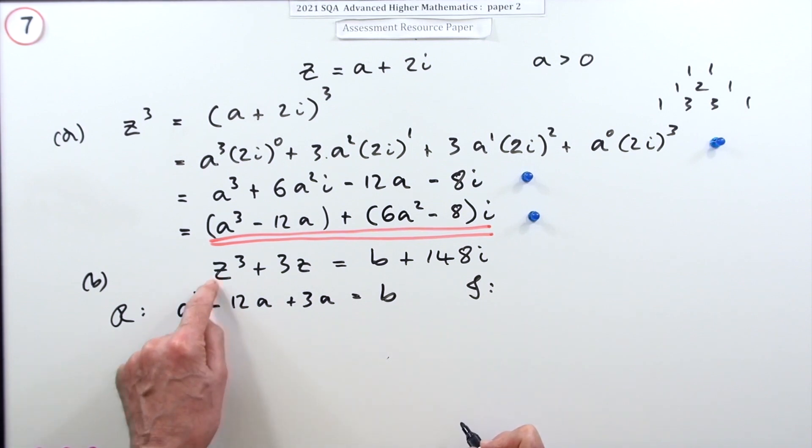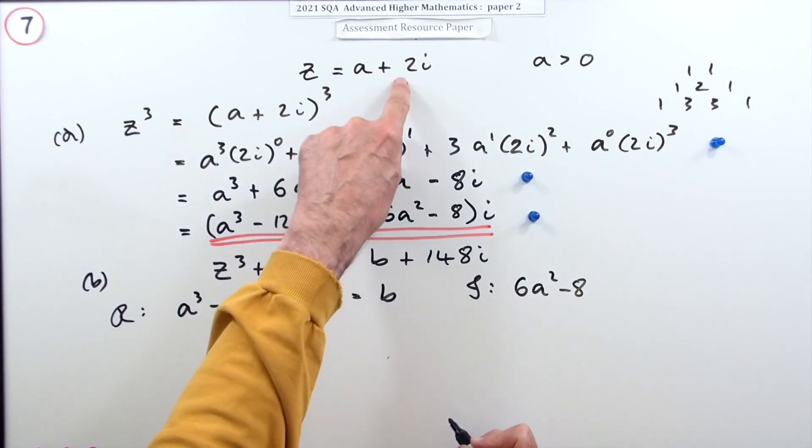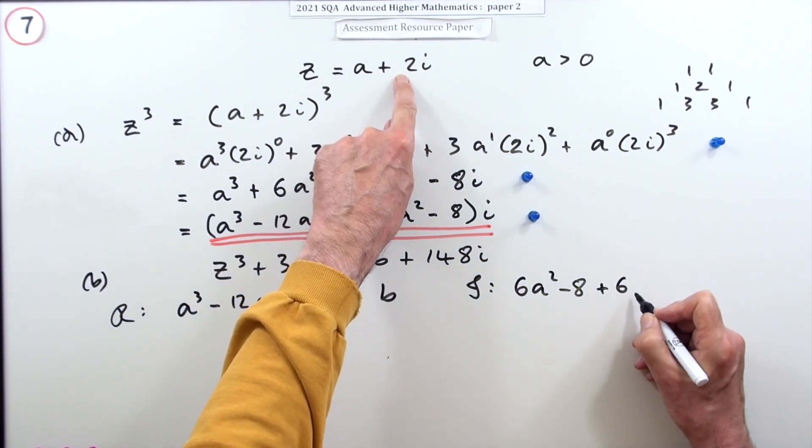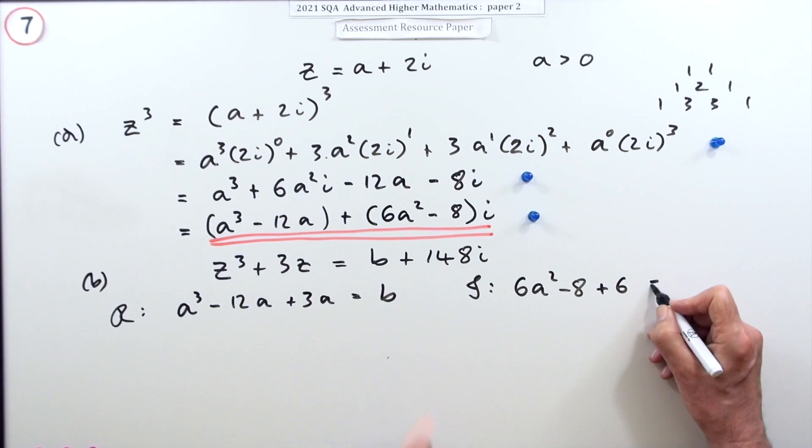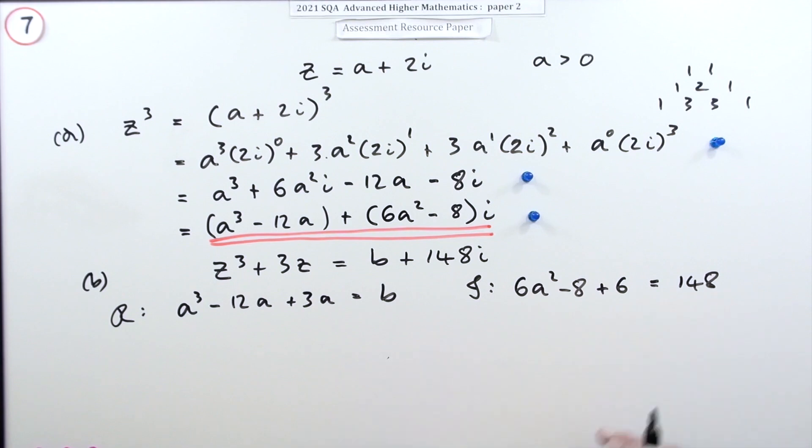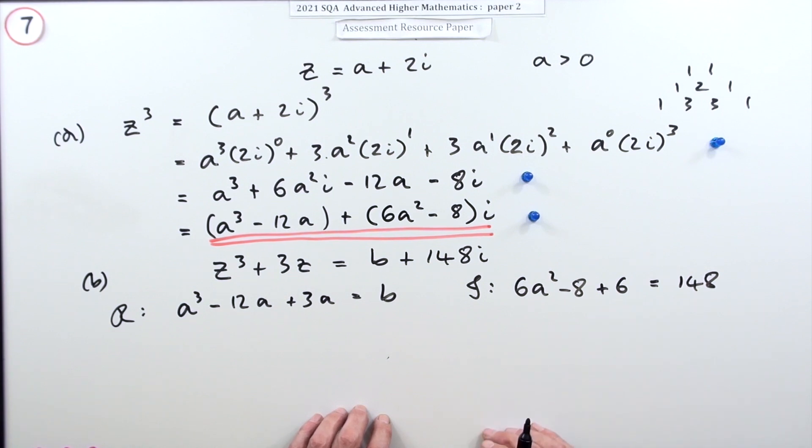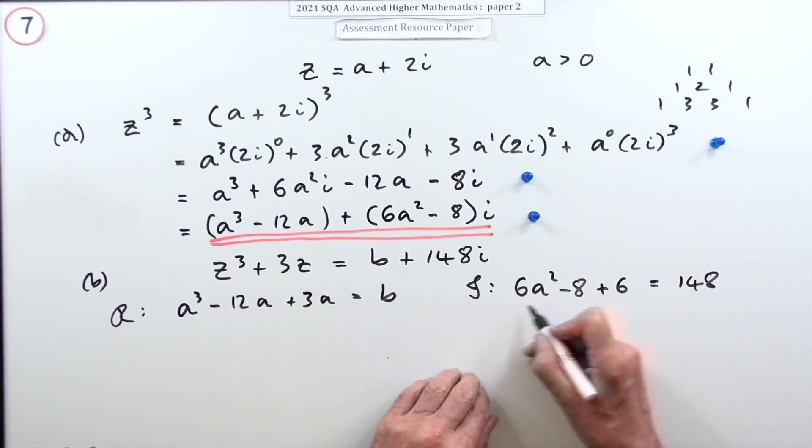The imaginary part of z cubed is 6a squared minus 8, and three lots of the imaginary part is 6i, which should equal 148. You don't need to put the i's in; you're just equating their coefficients. That is useful because from that I can get a. There must be marks for that: the first mark was for getting the whole expression, then the second mark was for equating the real part and imaginary part.